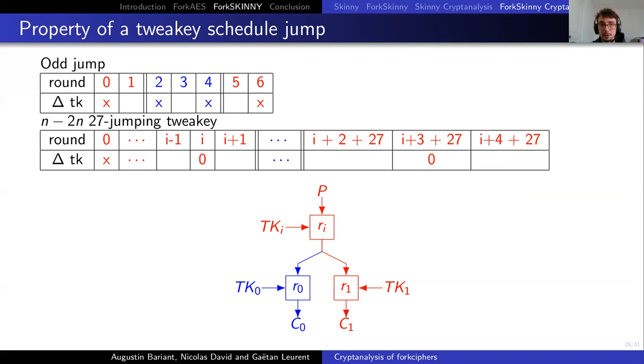But in the case of related-tweakey Skinny with 27 jumping rounds, a jump of 27 rounds, what we can do is have six consecutive blank rounds. And this is how we achieve it. Just before the forking point, we put our three blank rounds that was described in the previous work. Then we have our 27 jumps and we will have actually, once again, the three blank rounds. And this is because the tweakey schedule has a period of 30. So in the end, we obtain six blank rounds. And with this, we have everything we need to build our attack on ForkSkinny.